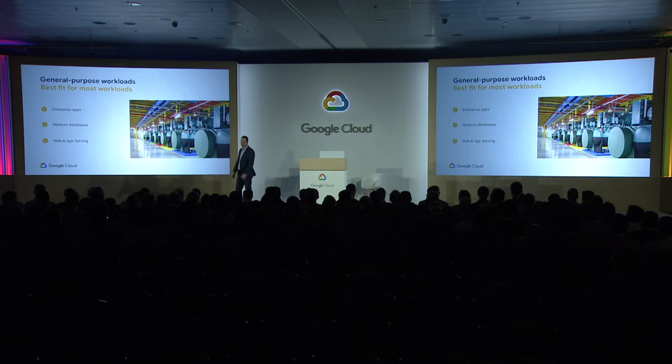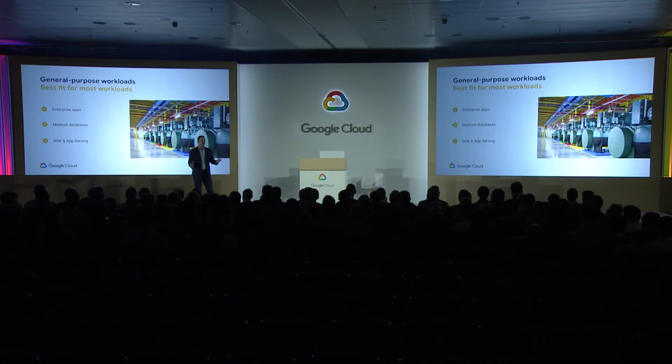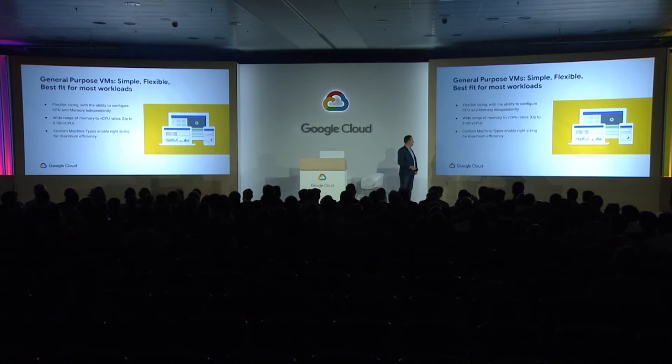Now that you know what the family offerings look like, how do you pick the right shape for your application? And remember, it's supposed to be simple. The majority of workloads that we see customers using fit most of the applications in your environment. These VMs are designed to be simple, flexible, and fit a majority of your operational tasks. For flexible sizing, they shouldn't have to be something you spend a lot of time thinking about. They have a wide range of memory-to-CPU ratios up to 8 GB per vCPU.